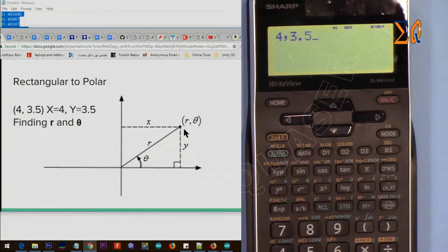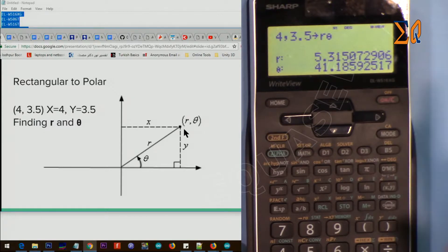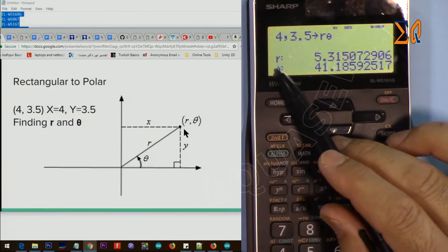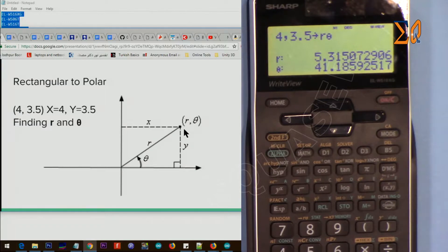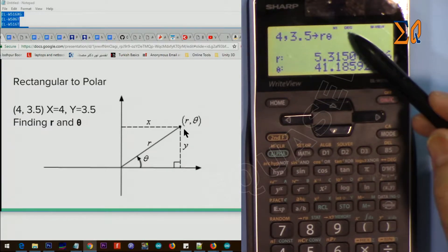So 4, and then press comma, this button X and Y, and then 3.5. This time we press second function and 8, which has an arrow of r and theta. Now it gives us that r is 5.3 here, and theta is 41 degrees. Remember that depends on this. If you have it in radian, you will get the radian value.